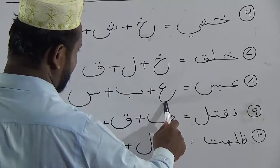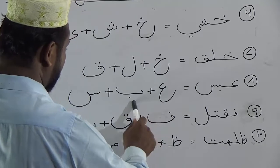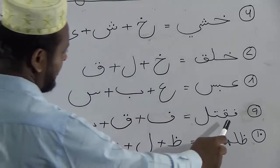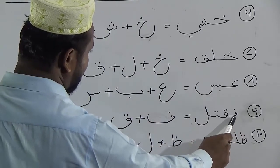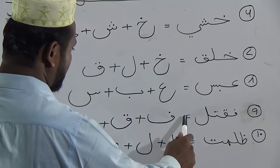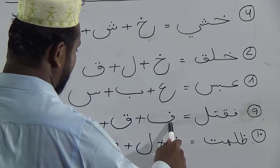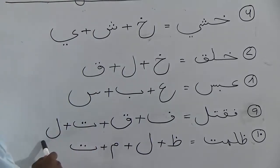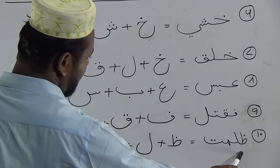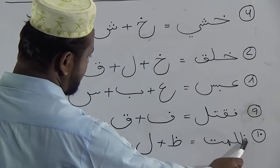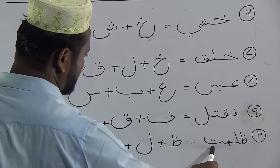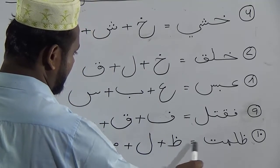Separating letters — ayn plus ba plus tinha. Number 9, separating shape. Number 10, separating shape.